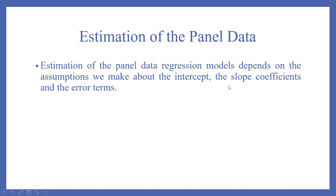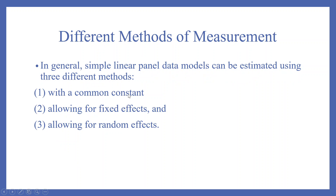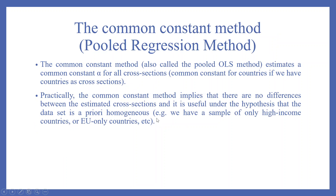The estimation of the panel data regression model depends on the assumptions we make about the intercept, the slope coefficients, and the error terms. In general, the simple linear panel data models can be estimated using three different methods: (1) with a common constant, (2) allowing for fixed effects, and (3) allowing for random effects.